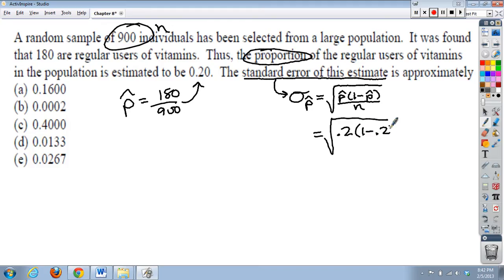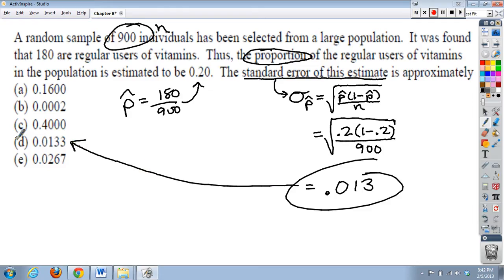times 1 minus 0.2 over 900. And if I throw that into my calculator, square root, 0.2 times basically 0.8 divided by 900, I get 0.013 repeating, which matches up closely to d.